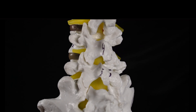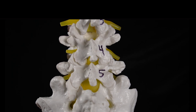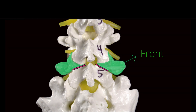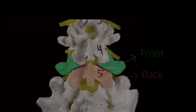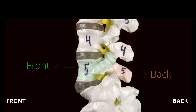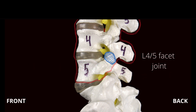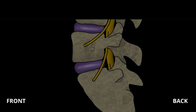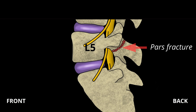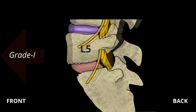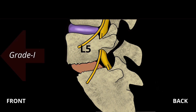When the pars interarticularis develops a crack, it disconnects the front of the L5 vertebrae from the back of the L5 vertebrae. This is a problem because the front of the L5 vertebrae is still tightly locked with the L4 vertebrae above through the L4-L5 facet joint. As a result, the spinal column becomes unstable, and the L5 vertebrae keeps sliding forward, dragging the entire spine forward with it.